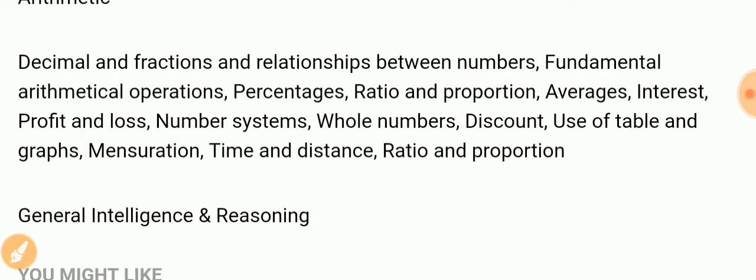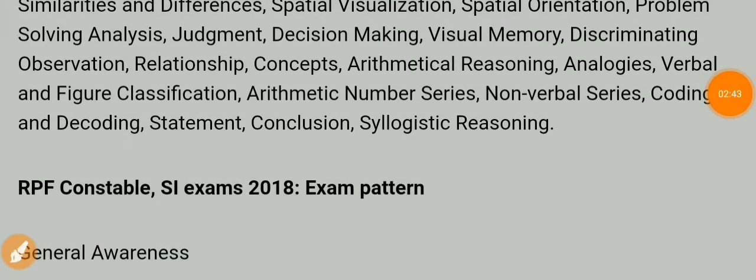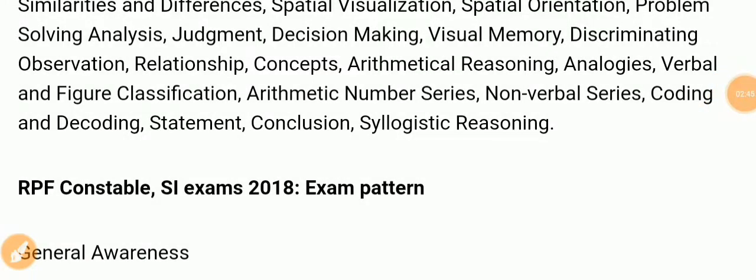General Intelligence and Reasoning includes: similarities and differences, spatial visualization and orientation, problem solving, analysis, judgment, decision making, visual memory, discriminating observation, relationship concepts, arithmetical reasoning, analogies, verbal and figure classification, arithmetic number series, non-verbal series, coding and decoding, statement conclusion, and syllogistic reasoning.